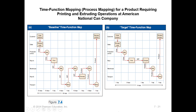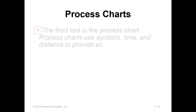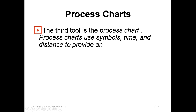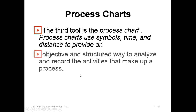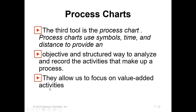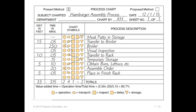The third tool is the process chart, which uses multiple symbols, time, and distance to help identify how we can reduce time and non-value-added activities. It provides an objective and structured way to analyze and record the activities that make up the process, allowing us to focus on value-added activities, reduce non-value-added ones, and increase value-added ones.